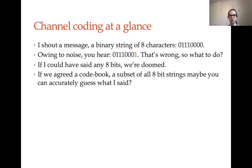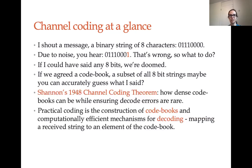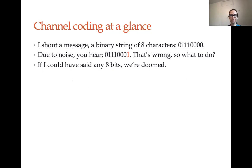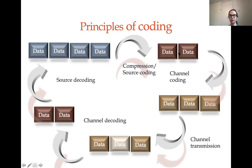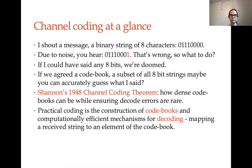We are going to agree to a code book, meaning that not all two to the eight possibilities can be valid codewords. It's going to have to be a subset of all eight-bit strings so that you can actually guess what I said. And that's what Shannon's 1948 coding theorem says: it states how dense the code books can be while ensuring decode errors are rare. In the example we saw, the code book had two to the 200 possibilities out of two to the 300 — that's how dense they were. Shannon's coding theorem tells you how dense those are.